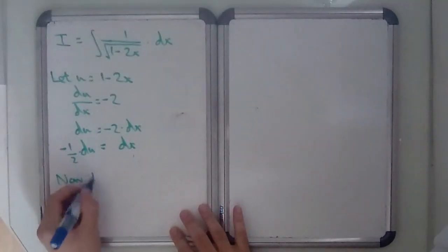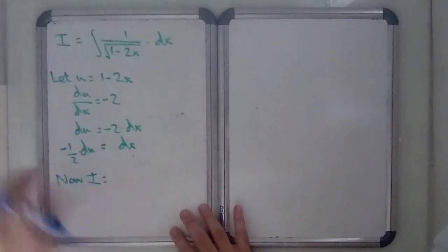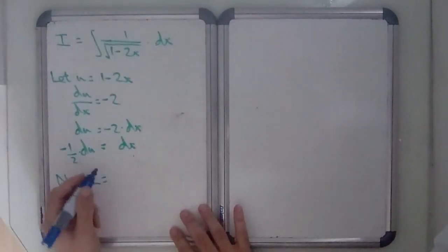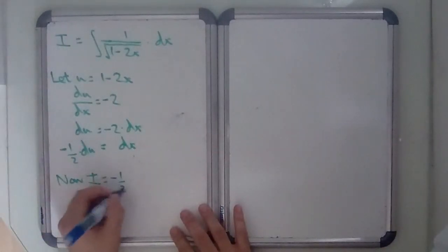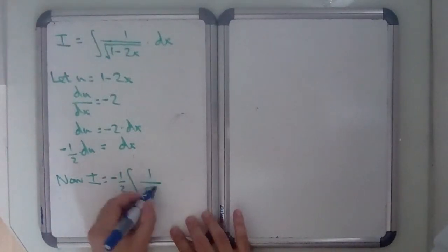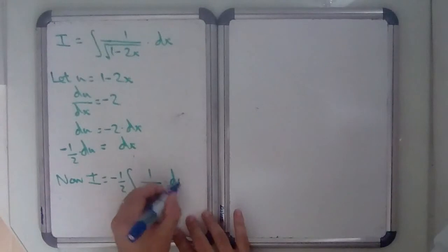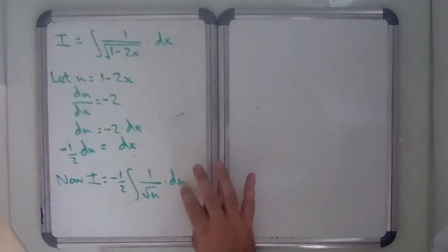So now the transformed integral equals, I'm going to bring this minus 1 half out as a constant. So minus 1 half times the integral of 1 over root u du. So dx written as minus 1 half du.